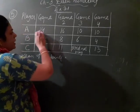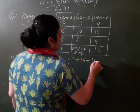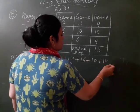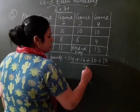So A ki games mein, first game mein 14 score, second game mein 16, third game mein 10, then in fourth also 10. So what is the total score and dividing by 4 games are there? Dividing by 4.